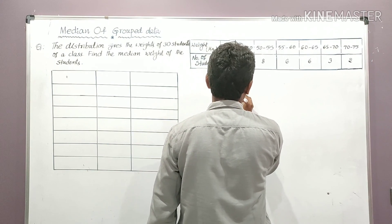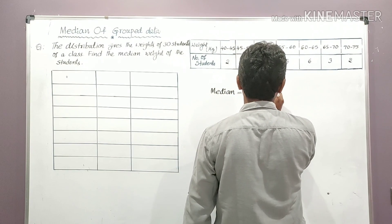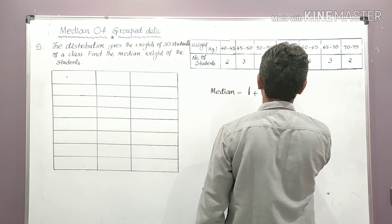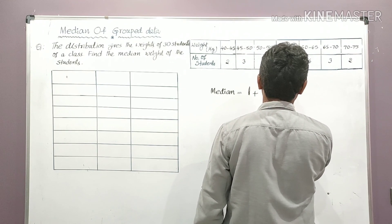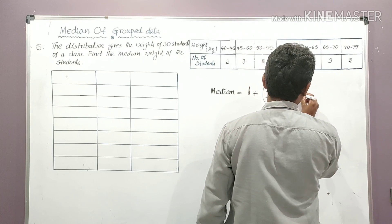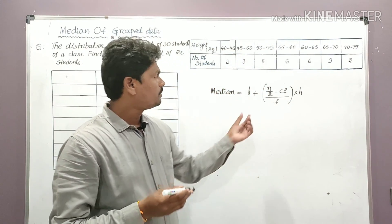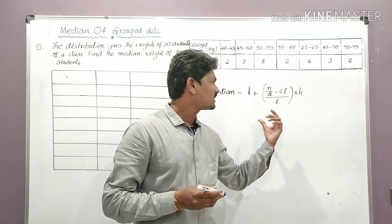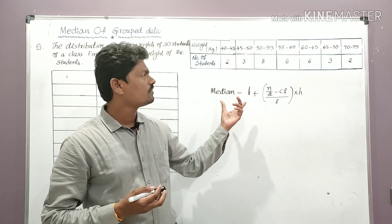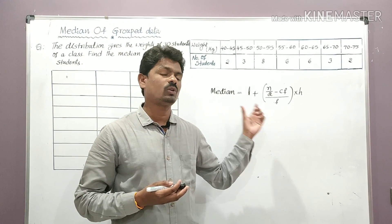We use this formula to find the median: Median = L + (n/2 − cf) / f × h. This is the formula we use to find the median of grouped data.